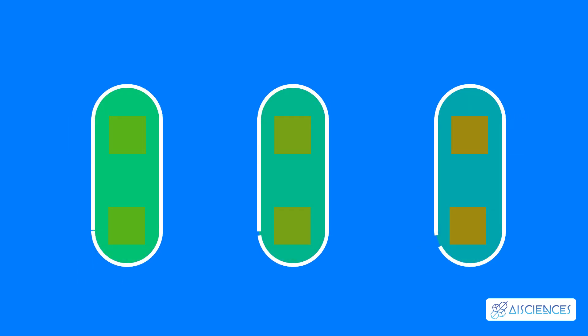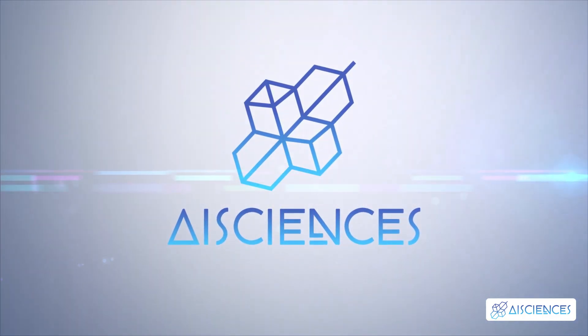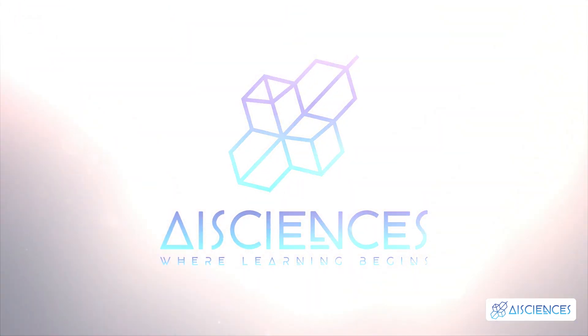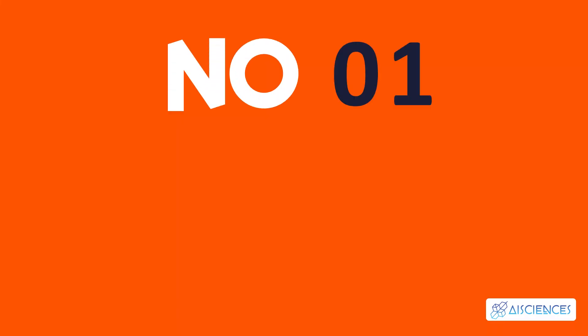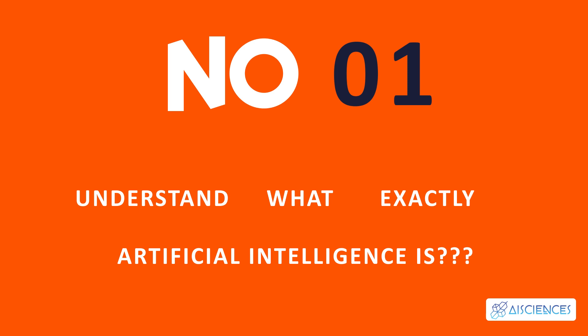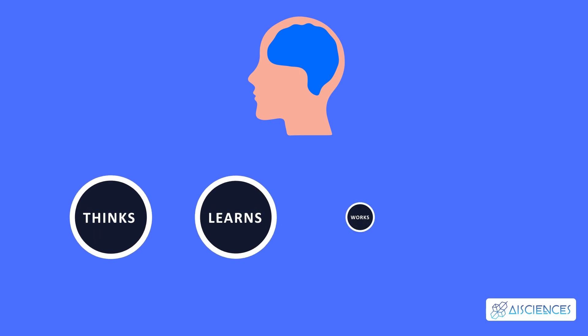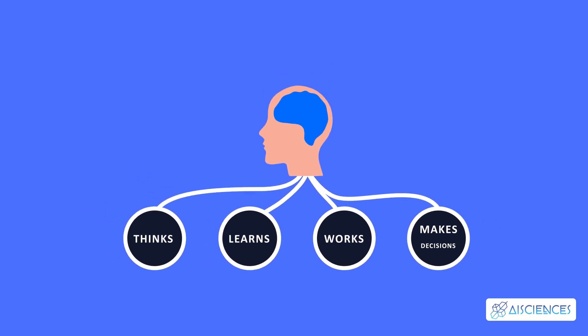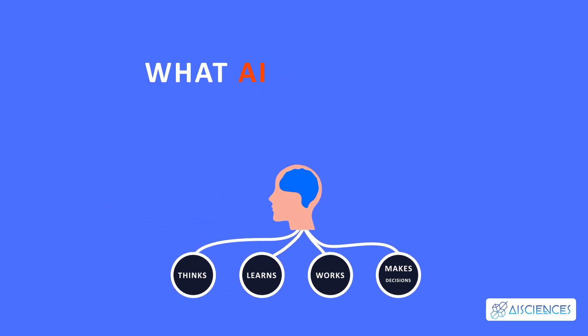I'll show you three ways you can learn artificial intelligence techniques easily. Number one: understand what exactly artificial intelligence is first. Artificial intelligence essentially studies how the human brain thinks, learns, works, and makes decisions. You really need to understand what intelligence software is at the core of AI. Even tech-savvy individuals are fascinated by what AI can do.